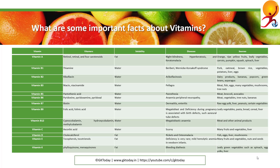Vitamin B1 is also known as thiamine. Its solubility is water-soluble and deficiency can cause beriberi and Wernicke-Korsakoff syndrome. It is found in pork, oatmeal, brown rice, vegetables, potatoes, liver, and eggs.